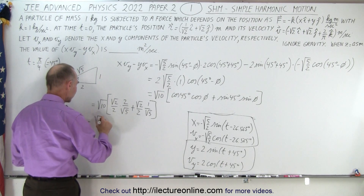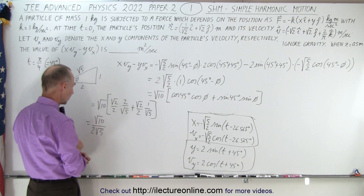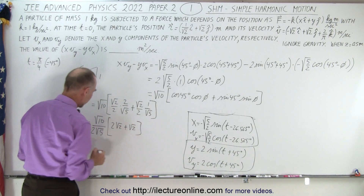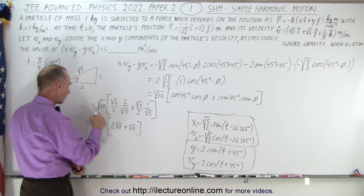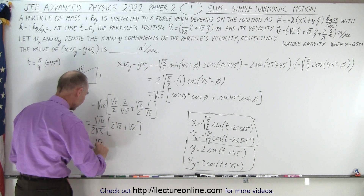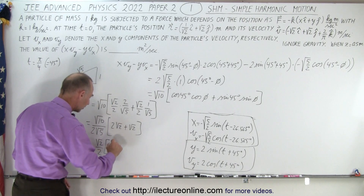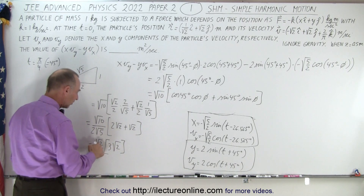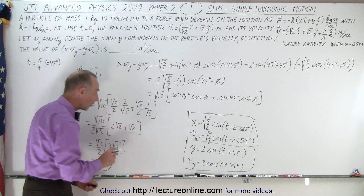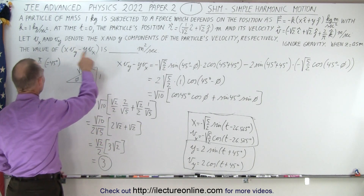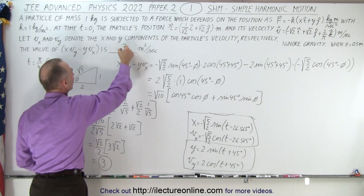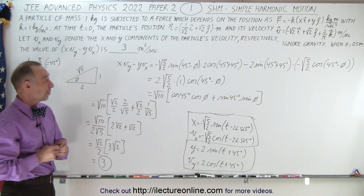So this equals the square root of 10 divided by 2 times the square root of 5, times 2 times the square root of 2 plus the square root of 2. Factoring out, we get square root of 2 divided by 2 times 3 times the square root of 2. This gives 2 divided by 2 is 1 times 3, which equals 3. So we can conclude that the value of x times v-sub-y minus y times v-sub-x, when time equals pi over 4, is 3 — which happens to be the correct value.